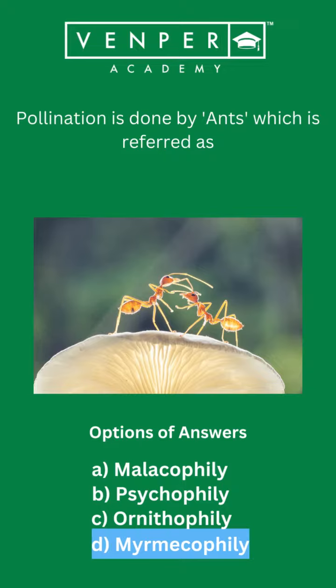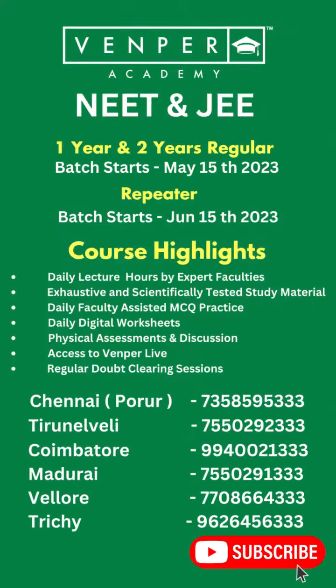So the correct option is D — myrmecophily. Thank you.